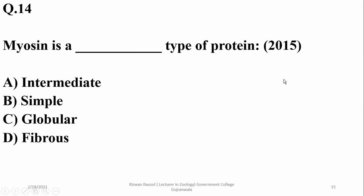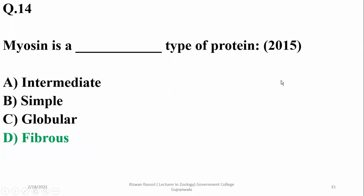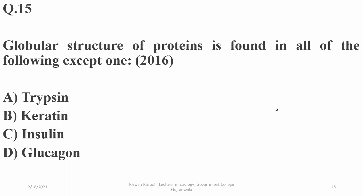Myosin is a fibrous type of protein according to PTB and plays a structural role. The globular structure of protein is found in all of the following except one — keratin is a fibrous structure. In some texts it is also classified as intermediate category, but UHSS has preferred fibrous protein for PTB. Globular proteins include trypsin, insulin, and glucagon, but keratin is a fibrous protein.